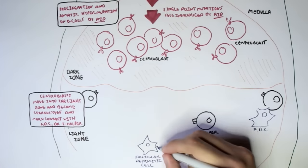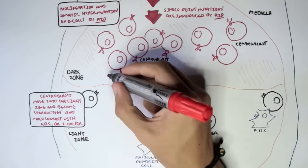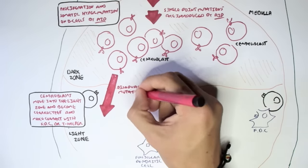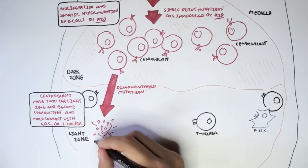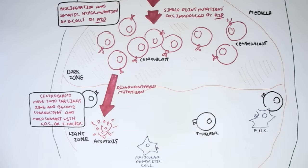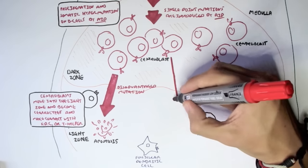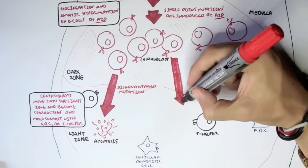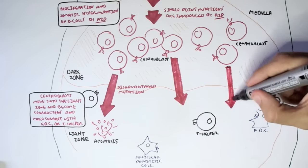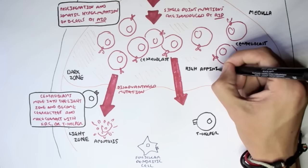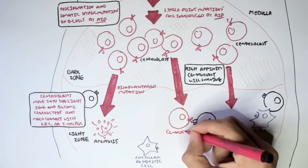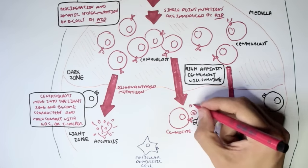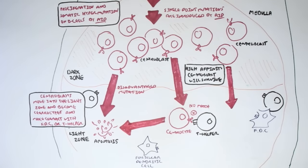Let's take a particular centroblast. This centroblast had a change in its variable region through hypermutation, but its affinity has decreased. It had a disadvantaged mutation and so goes through apoptosis — cell destruction — because it is not required and does not recognize the antigen on the T cell or follicular dendritic cell. Similarly, another centroblast whose antibody does not recognize the antigen on the T helper cell will also be destroyed through apoptosis once it enters the light zone as a centrocyte.